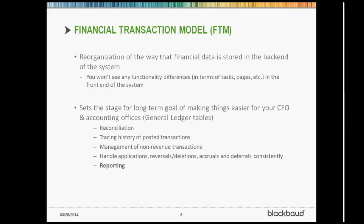Hello, everybody. We're going to talk about the financial transaction model, referred to internally at Blackbaud as FTM — you'll hear that abbreviation throughout the rest of the presentation. It stands for financial transaction model. At heart, it's a reorganization of the financial information and how we store that in the back end of our database. That includes our general ledger information and revenue information. As an end user, you're not going to see necessarily any differences in how users interact with the application in terms of entering or accessing revenue. It's strictly a back-end change, and it sets the stage long-term for us to consistently apply information to accounting and revenue dollars. This allows us to give your CFOs and accounting folks a much more linear view of that data.